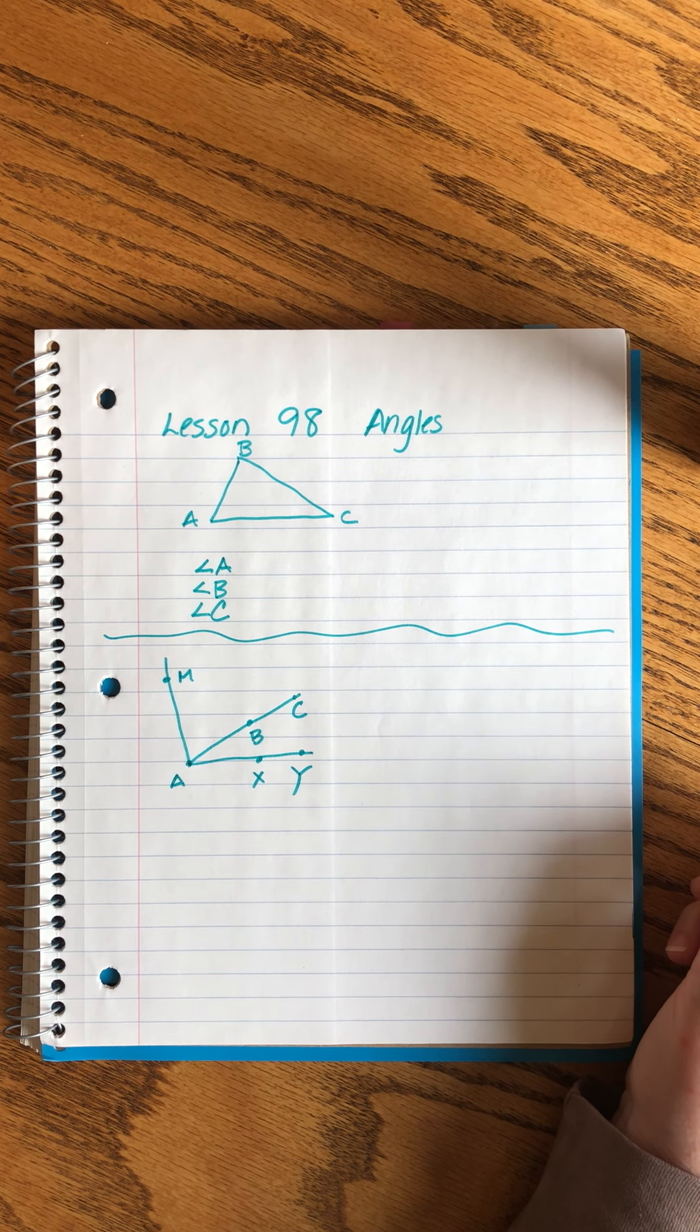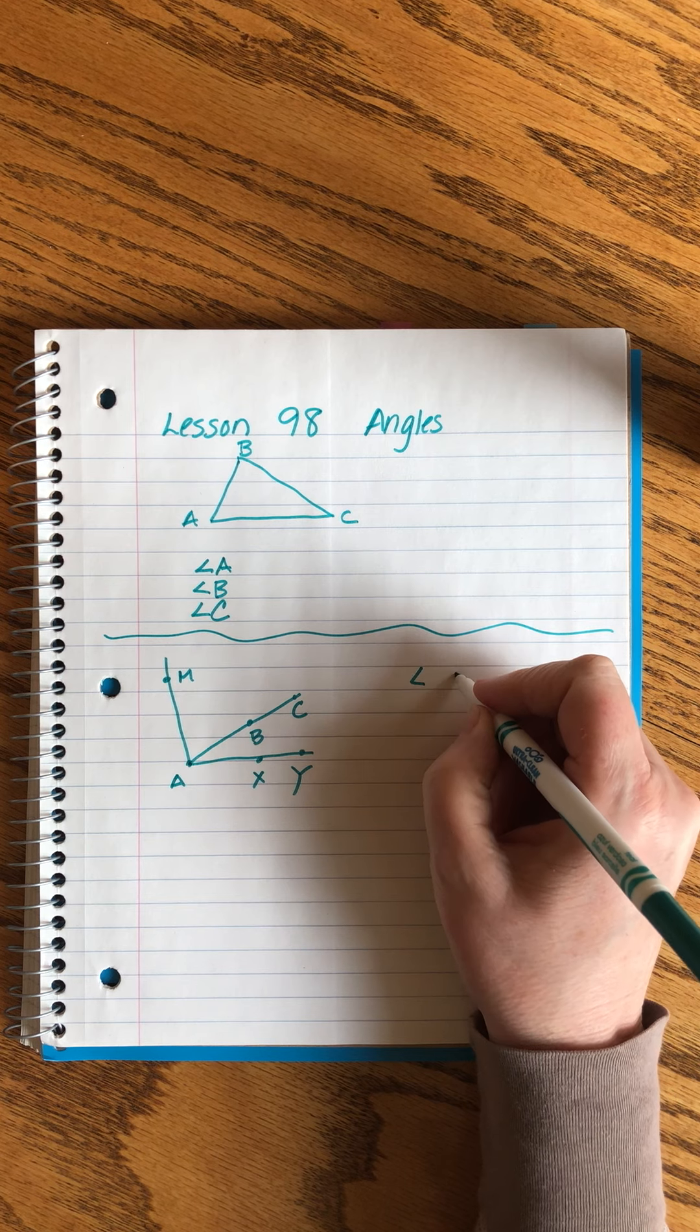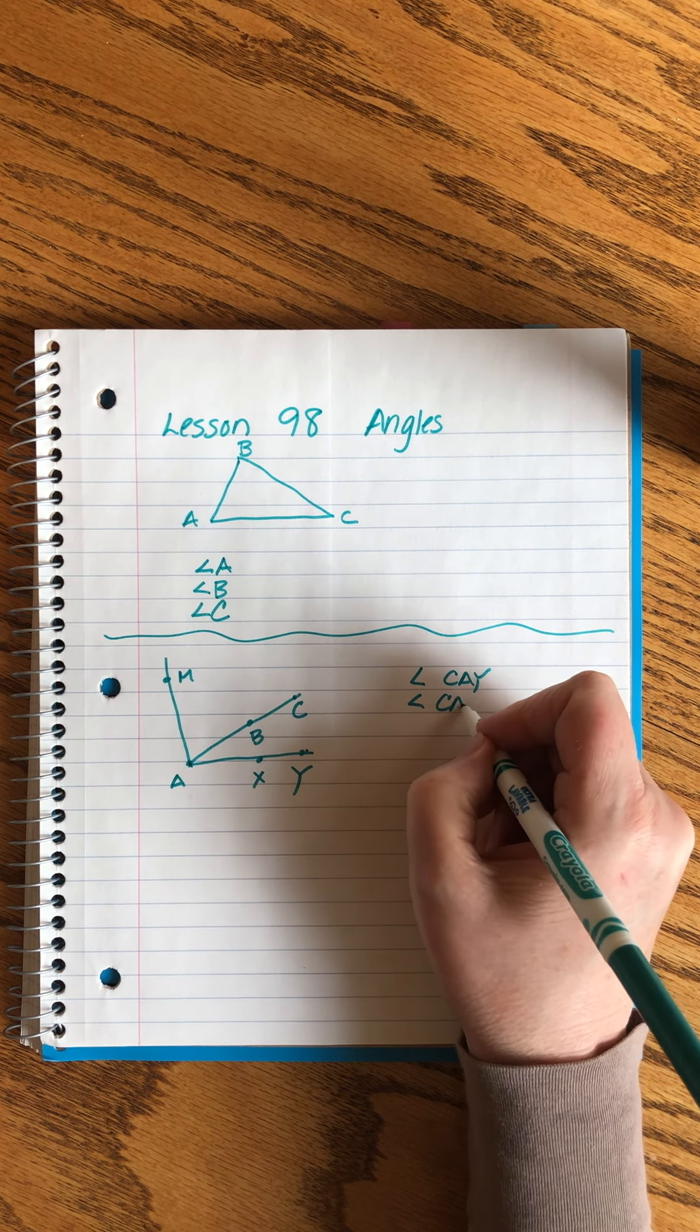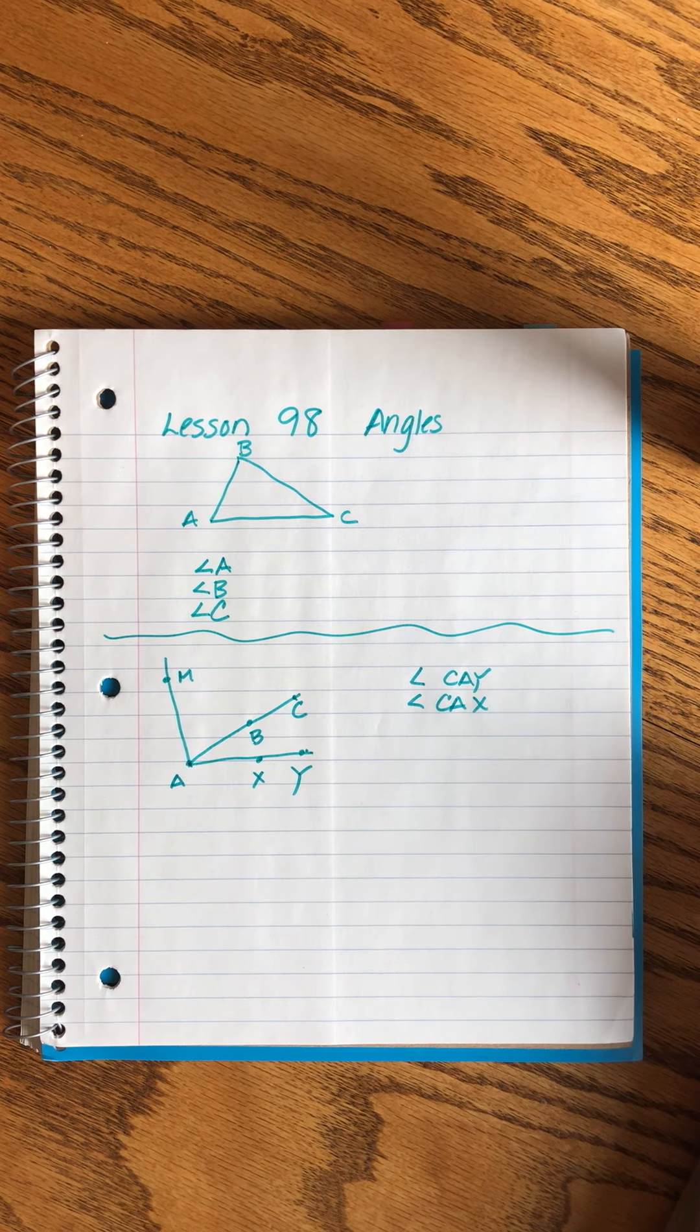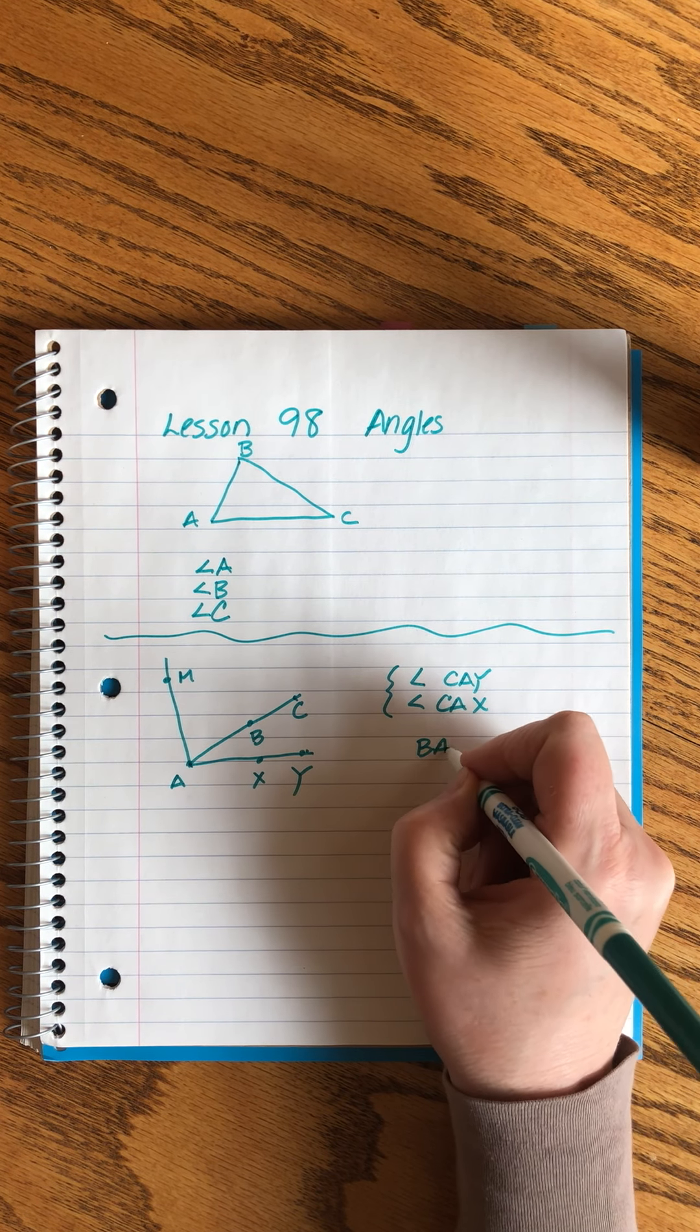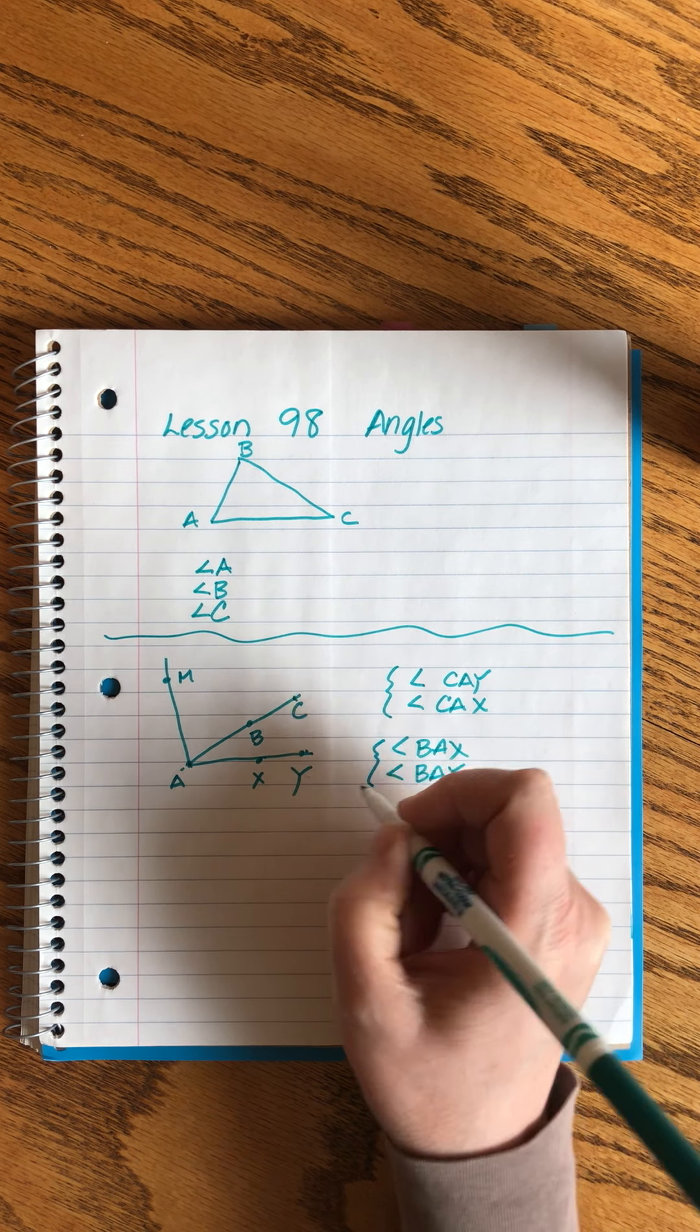So, we can come up with a lot of different angles here. We can talk about angle CAY. That would be this. We can talk about angle CAS. That would be the same angle, wouldn't it? These two are the same. What about angle BAS? And then angle BAY. Also the same.